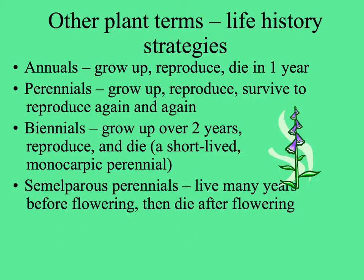Other terms used in botany and plant ecology for life history strategies include annuals, which grow up, reproduce, and die within the space of a year. Perennials grow up, reproduce, and survive to reproduce the next year and the year after until they die. The term biennial is used especially among gardeners for plants that need two years to reach maturity — they grow up over a two-year period, reproduce, and then die or are harvested, like biennial beets.